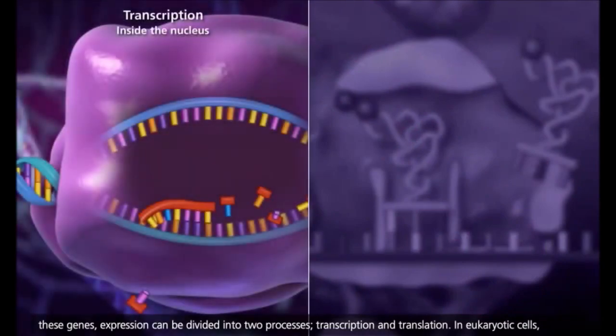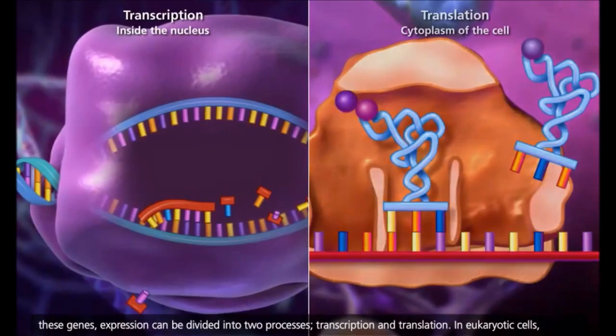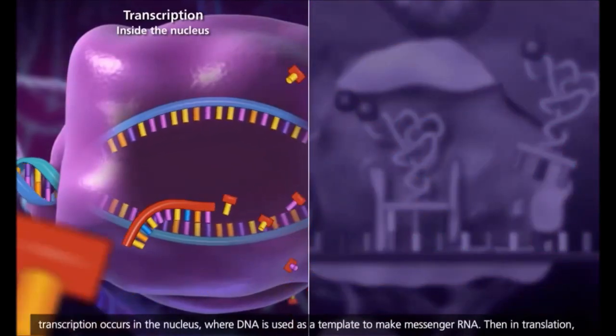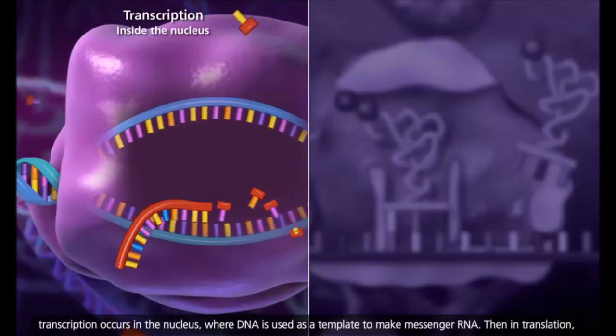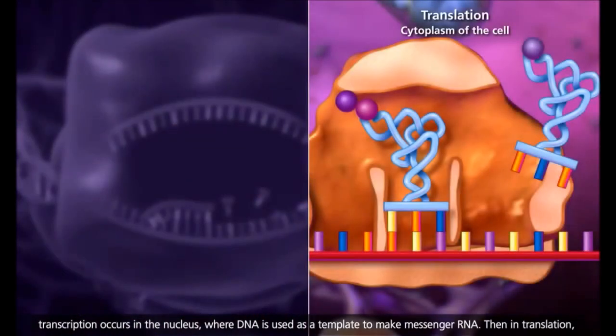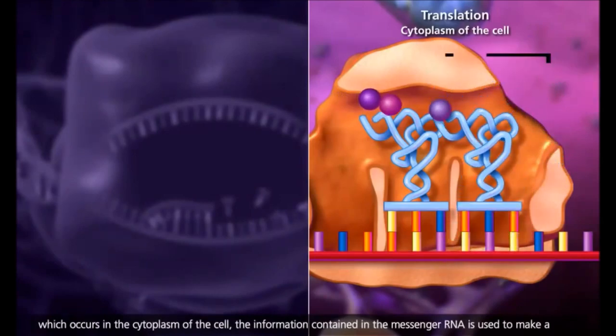In eukaryotic cells, transcription occurs in the nucleus, where DNA is used as a template to make messenger RNA. Then in translation, which occurs in the cytoplasm of the cell, the information contained in the messenger RNA is used to make a polypeptide.